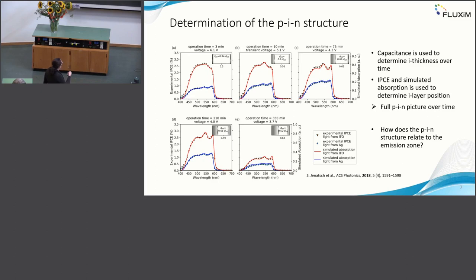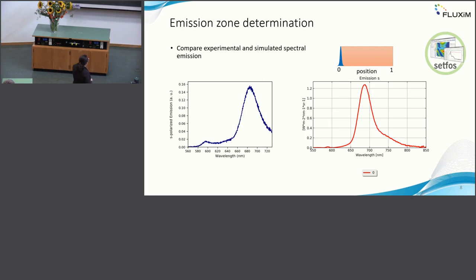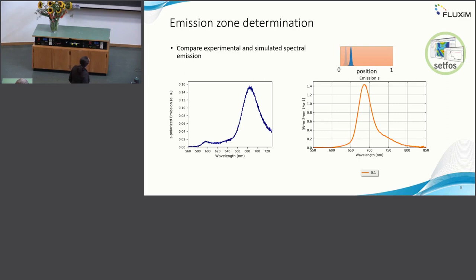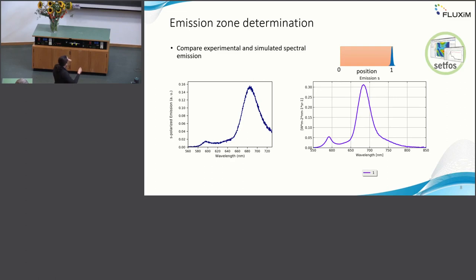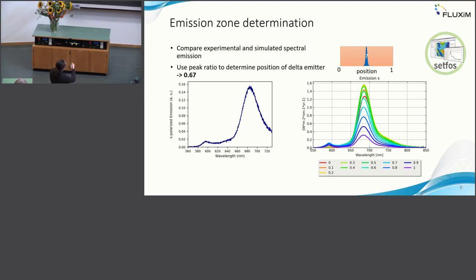The question was now: how does this p-i-n structure relate to the emission zone? You could think the emission zone is exactly inside this p-i-n or inside the intrinsic layer of the p-i-n structure, but it's not necessarily like that. That's why we also looked at the emission spectrum. This is a typical emission spectrum of such cyanine dyes. You have these two peaks quite dominantly. If you compare this with a simulation, you can vary the position of such a delta emitter, and you see that especially the ratio between these two peaks changes.